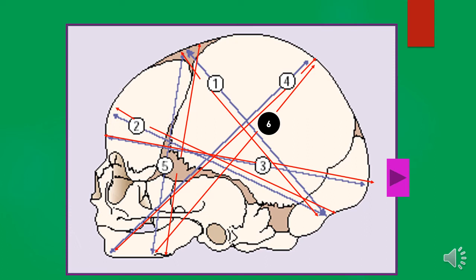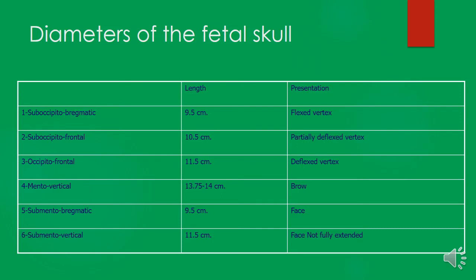Regarding the clinical presentations associated with these diameters: with the suboccipital bregmatic, the presentation will be a flexed vertex. With the suboccipital frontal, you will see a partially deflexed vertex. With the occipital frontal, you'll see a deflexed vertex. With the mental vertical, the presentation will be a brow presentation. With the submental bregmatic, it will be a face presentation which is not fully extended. Those are the diameters of the fetal skull, with their presentations, lengths, and measurements.